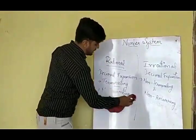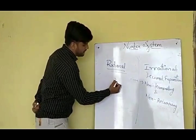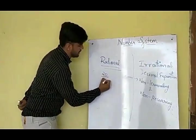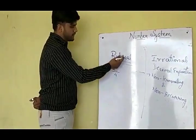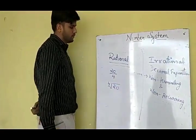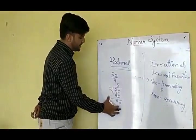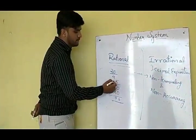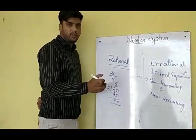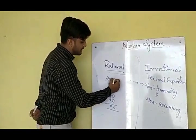For example, terminating: take 20 divided by 4. We know 4 times 5 is 20, so our division is over and the remainder is 0. The answer is 5. It is a terminating number because the division ends — we get remainder 0 and cannot divide further. Therefore, it is a rational number.